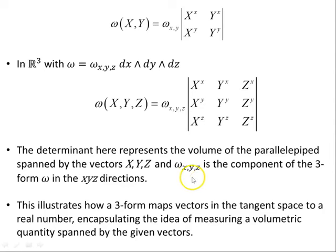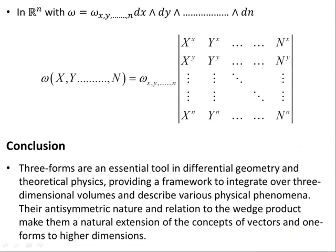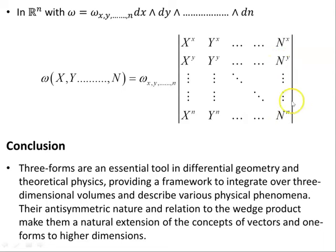This illustrates how a three-form maps vectors in the tangent space to a real number, encapsulating the idea of measuring a volumetric quantity spanned by the given vectors. In Rn, with omega equal to these components times dx wedge dy wedge ... wedge dn, then omega acting on vectors x, y up to N will be the components out front times the determinant of that N×N matrix, whose elements are the components of the individual vectors.